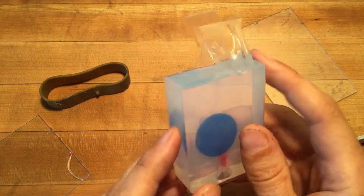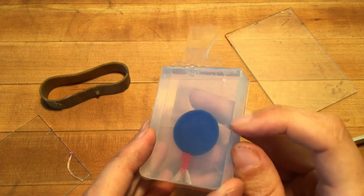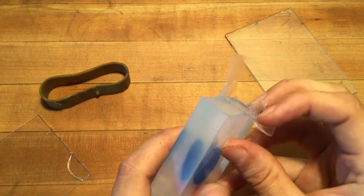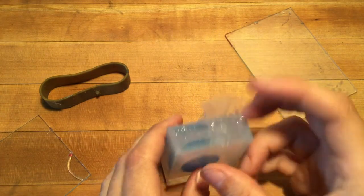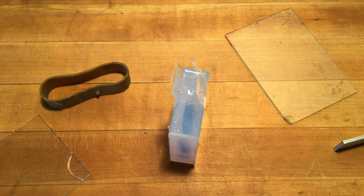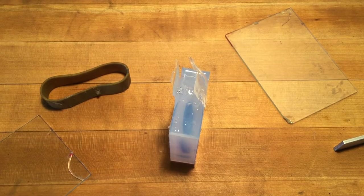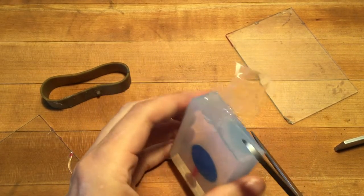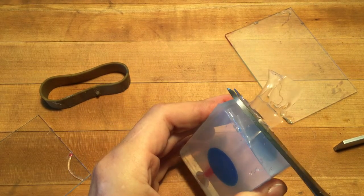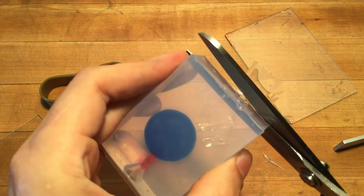The only thing I would do at this point is just trim off any of the remaining dangling bits, and you can do that with either scissors or an exacto. I found with silicone what works best is scissors...